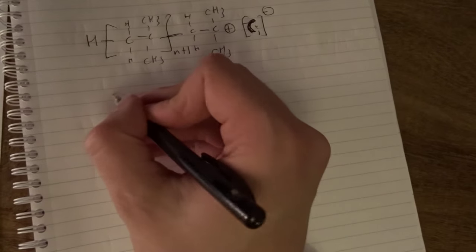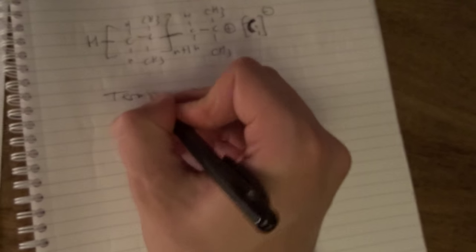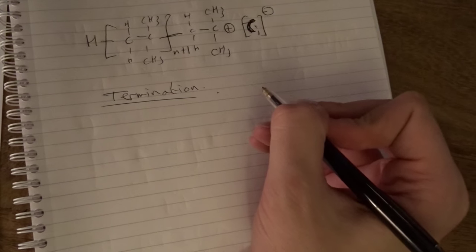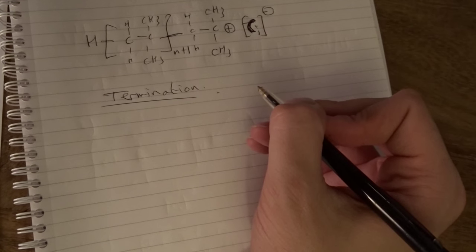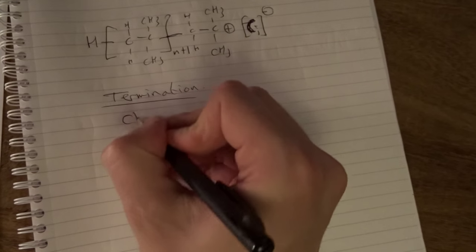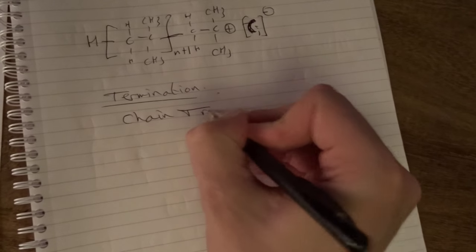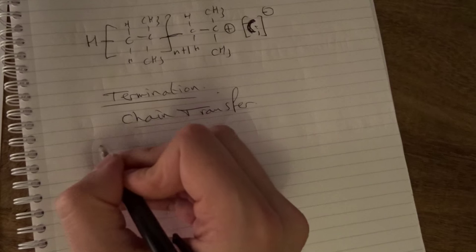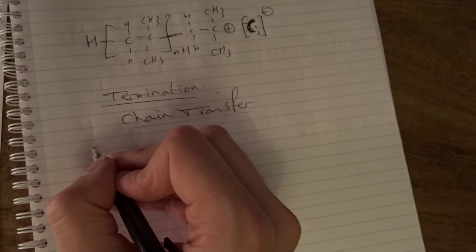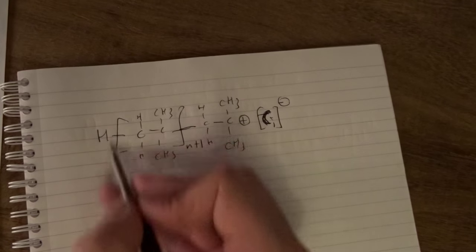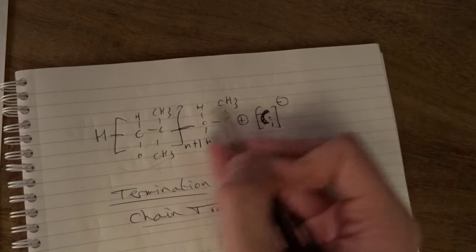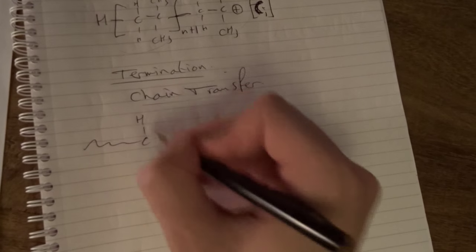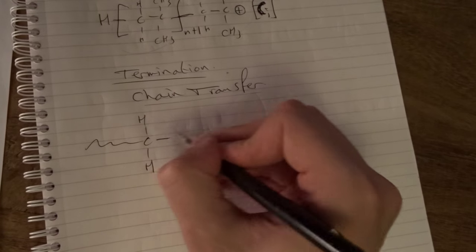And now we have the termination. We look at two termination mechanisms. We can look at the chain transfer. We will abbreviate it now. Actually in your exam you just write down this structure again and then what will happen, but for this video we will abbreviate it a little bit.